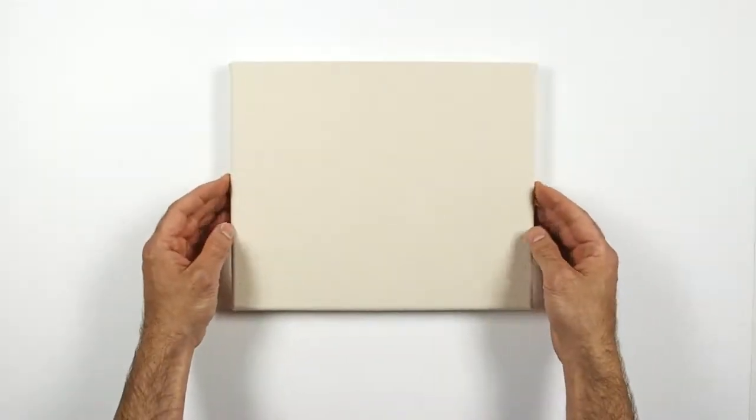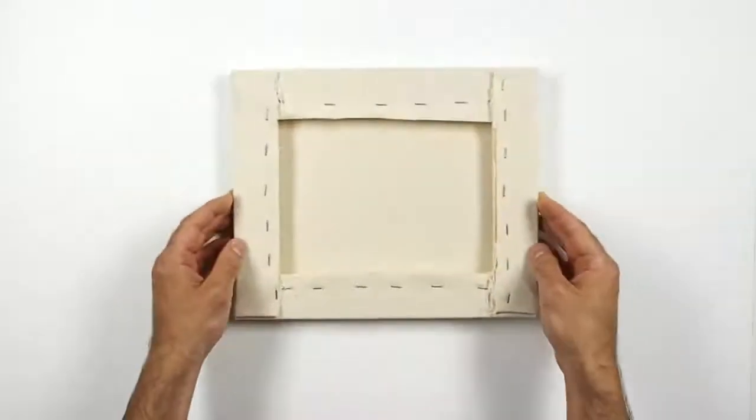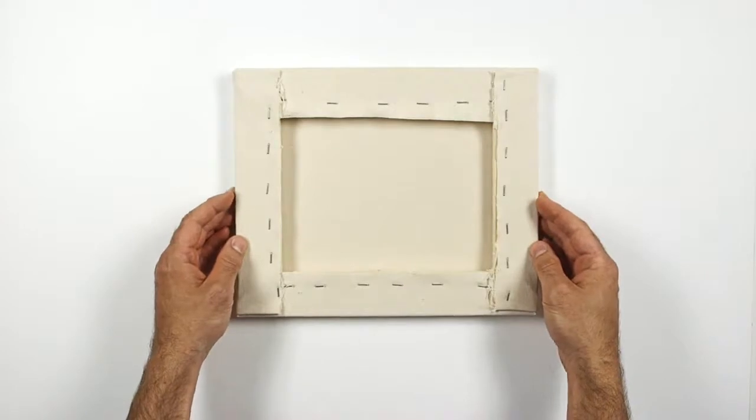By now you should have a reasonably tight canvas. To make it tighter still, which will be important when you're applying pressure and rough techniques to your canvas, you should add the wooden wedges.